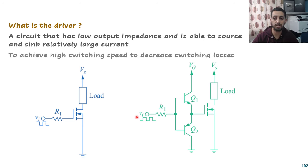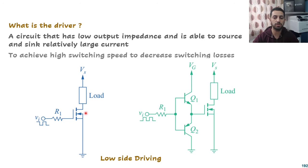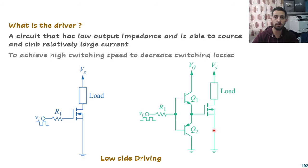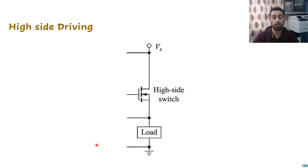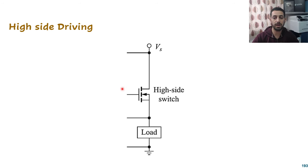These transistors are classified as low side MOSFETs because they are connected to the ground, and the load is floating and connected to the high side. Low side driving is easy because it is referenced to ground — once I apply 5V or 20V, it is referenced to ground. However, we have another configuration called high side driving, where the source is not connected directly to ground, and that is where complications arise.